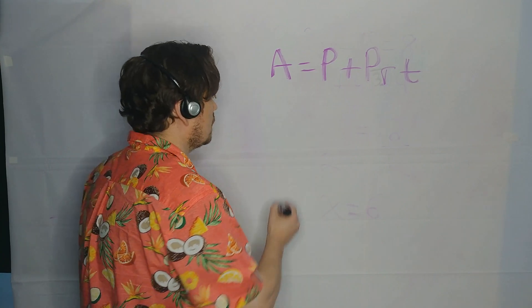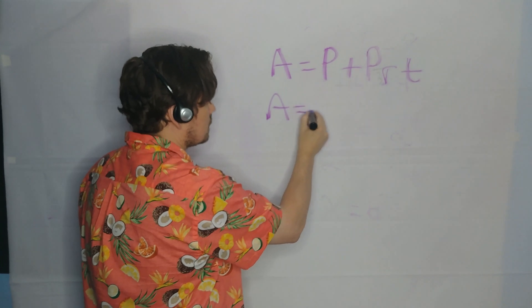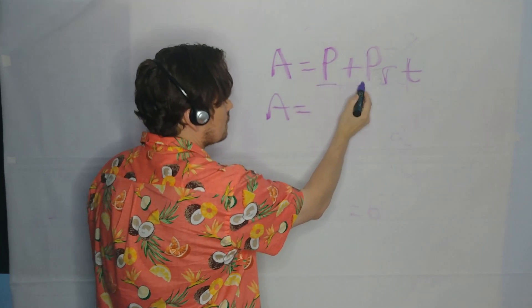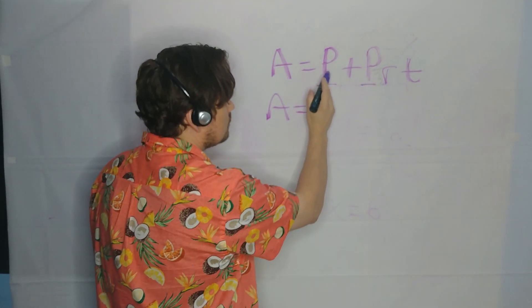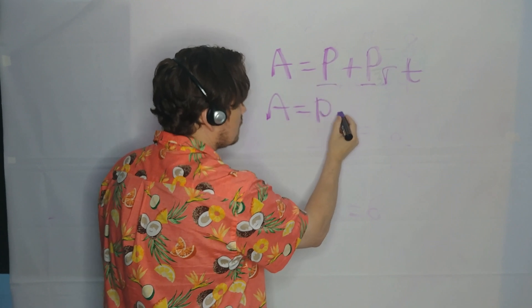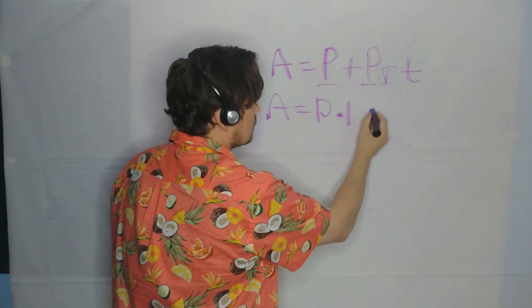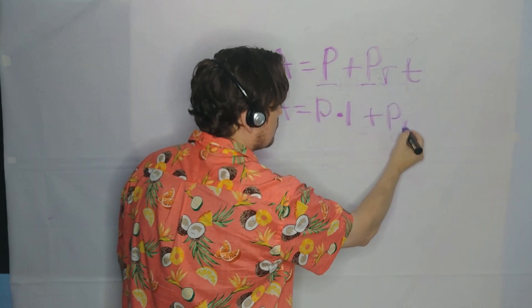So let's just do it for P. So first thing, what I would do here is this. P occurs here and that occurs here. Now remember, P really means P times 1 plus P, R, T.